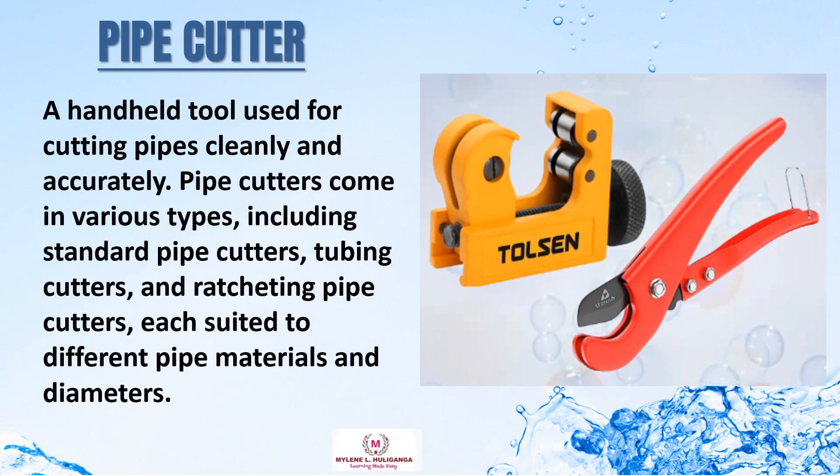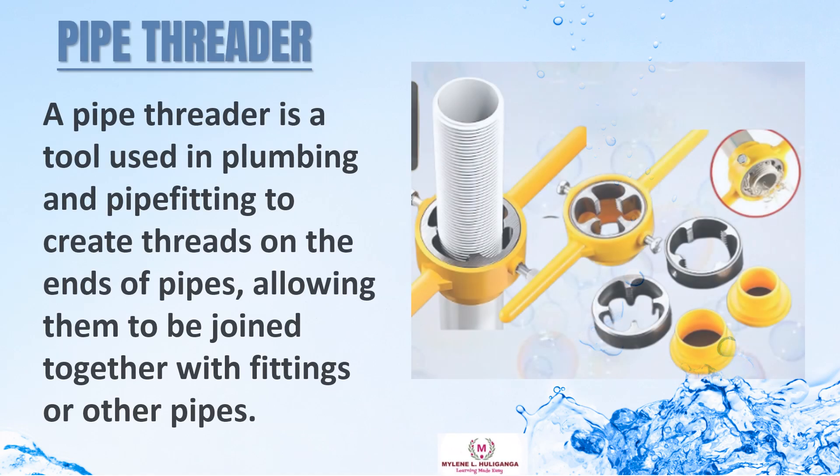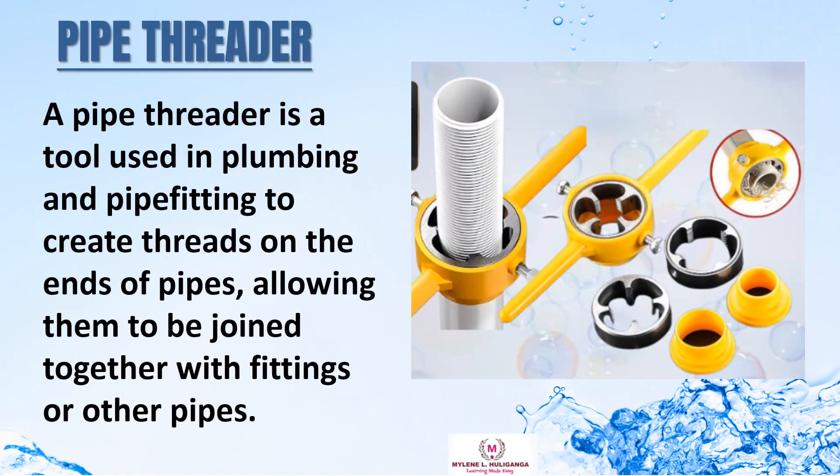Pipe cutter: a handheld tool used for cutting pipes cleanly and accurately. Pipe cutters come in various types including standard pipe cutters, tubing cutters, and ratcheting pipe cutters, each suited to different pipe materials and diameters. A pipe threader is a tool used in plumbing and pipe fitting to create threads on the ends of pipes, allowing them to be joined together with fittings or other pipes.